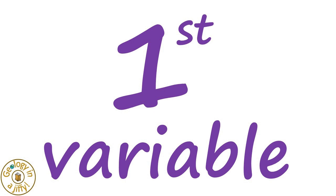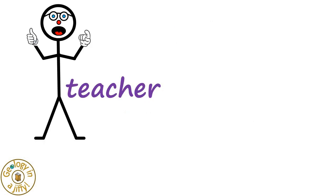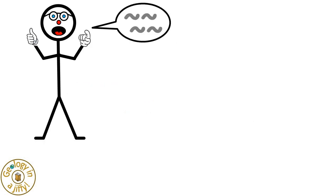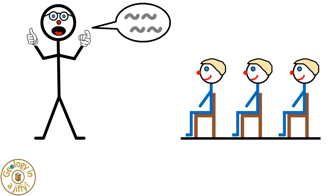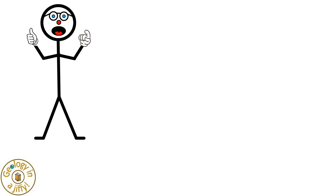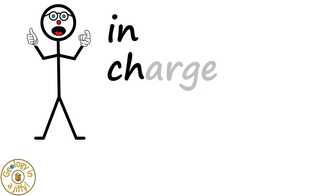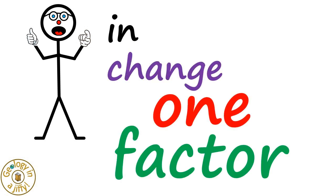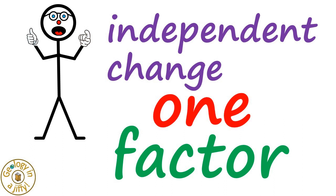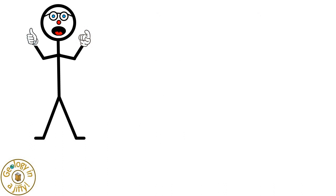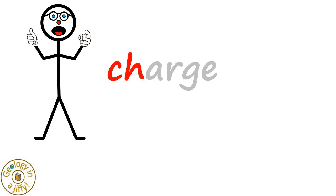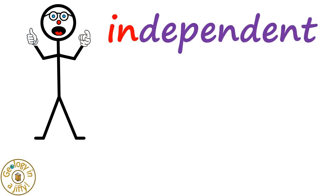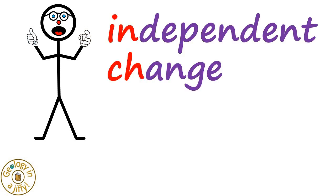The first variable is represented by the teacher instructing the class, telling the students what to do. The teacher is in charge, and there is one teacher, because the one factor that we change in experiments is the independent variable. The teacher is in charge, representing the independent variable which we change.